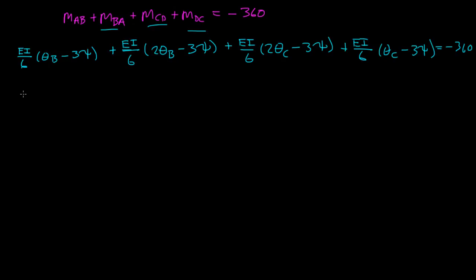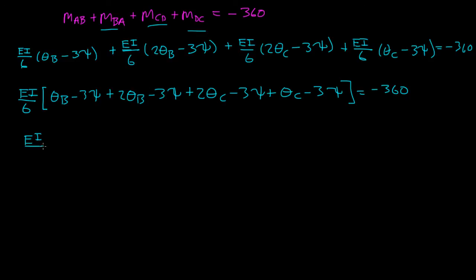Here, I can factor out an EI over 6. That's kind of nice. And I get theta B minus 3 psi plus 2 theta B minus 3 psi plus 2 theta C minus 3 psi, plus theta C minus 3 psi, and that's equal to negative 360. So, let's simplify this down a bit, EI over 6. You have theta B, you have 1 theta B, you have 2 theta B, so that's 3 theta B.